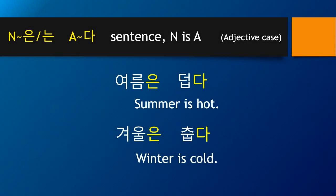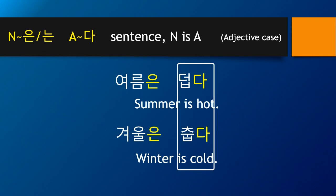Here we see the A template again from season one. How do you say 'summer is hot'? 여름은 덥다. How do you say 'winter is cold'? 겨울은 춥다. This is the typical NA template you already know. Unlike root words for a verb, root words for adjectives can be used in a sentence without modification — just like 덥다 and 춥다.